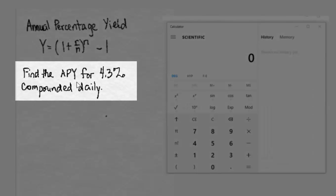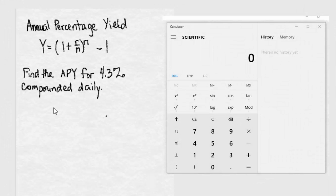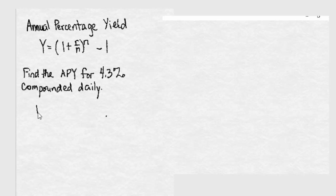Let's find the annual percentage yield for 4.3% interest compounded daily. So we're going to plug into our formula and we need to know that the interest rate r that we plug in is going to be written in decimal form, 0.043, moving the decimal place two spaces to the left.